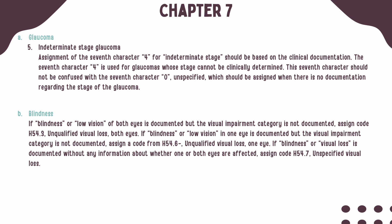If blindness or low vision in one eye is documented and the visual impairment category is not documented, then you should assign a code from subcategory H54.6 based on your laterality.